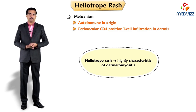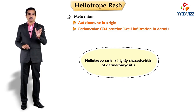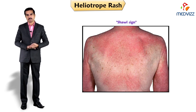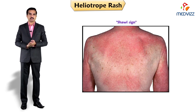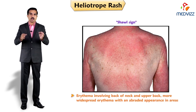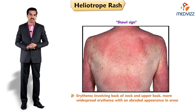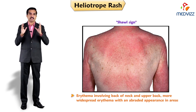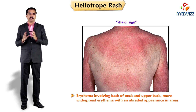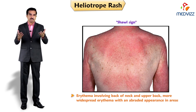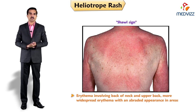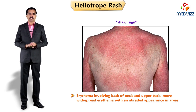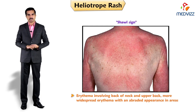When discussing heliotrope rash and dermatomyositis, another important term is the shawl sign. The shawl sign refers to the same heliotrope rash in dermatomyositis, but specifically when there is erythema involving the back of the neck and upper back, as well as more widespread erythema with an abraded appearance in these areas. This completes the topic of heliotrope rash in dermatomyositis.